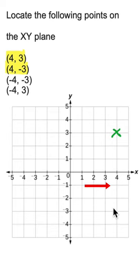To locate (4, -3), we move to the right of the origin by 4 and down by 3. To locate (-4, -3), we move to the left of the origin by 4 and down by 3.